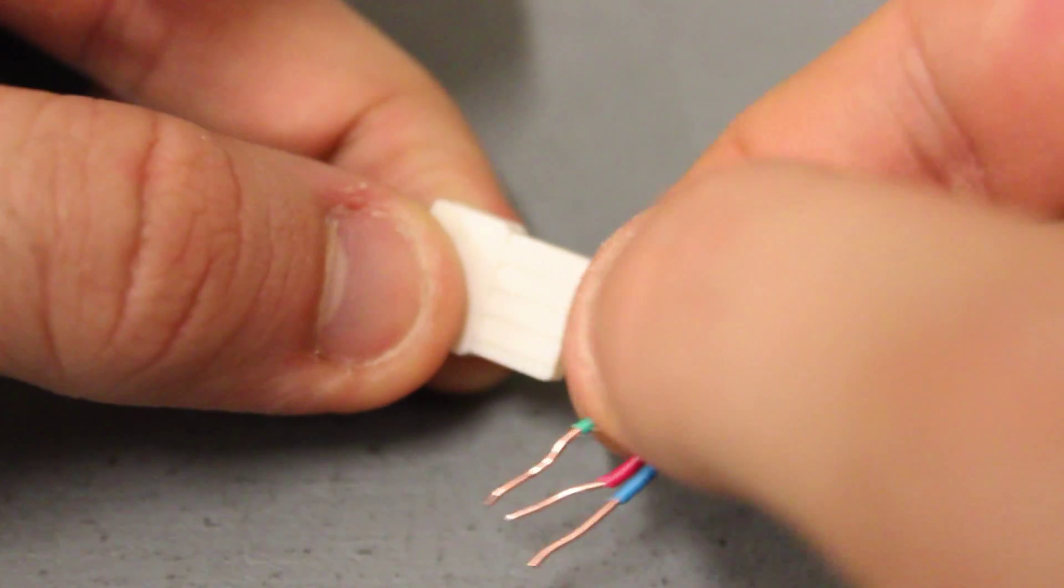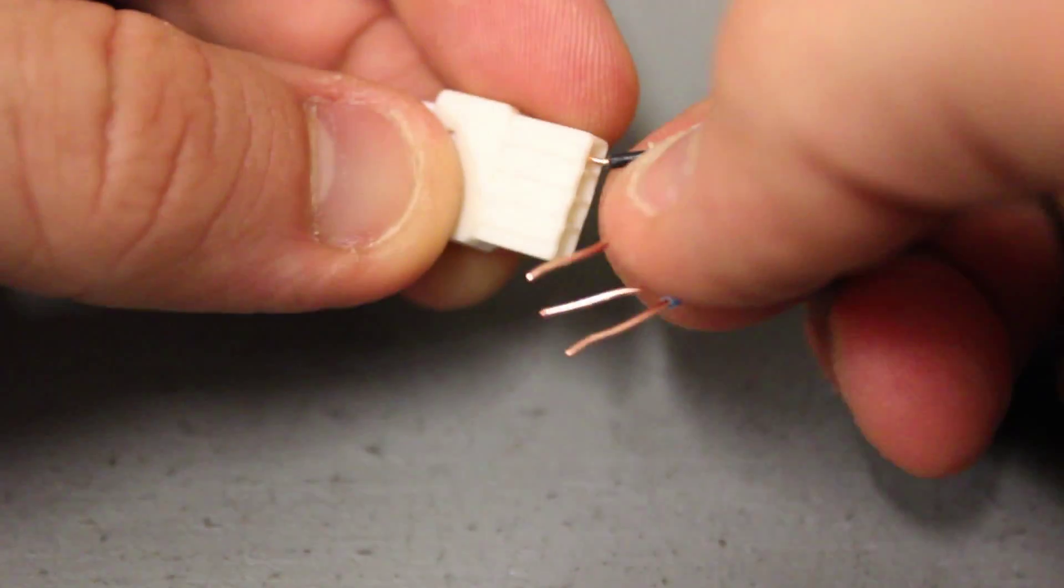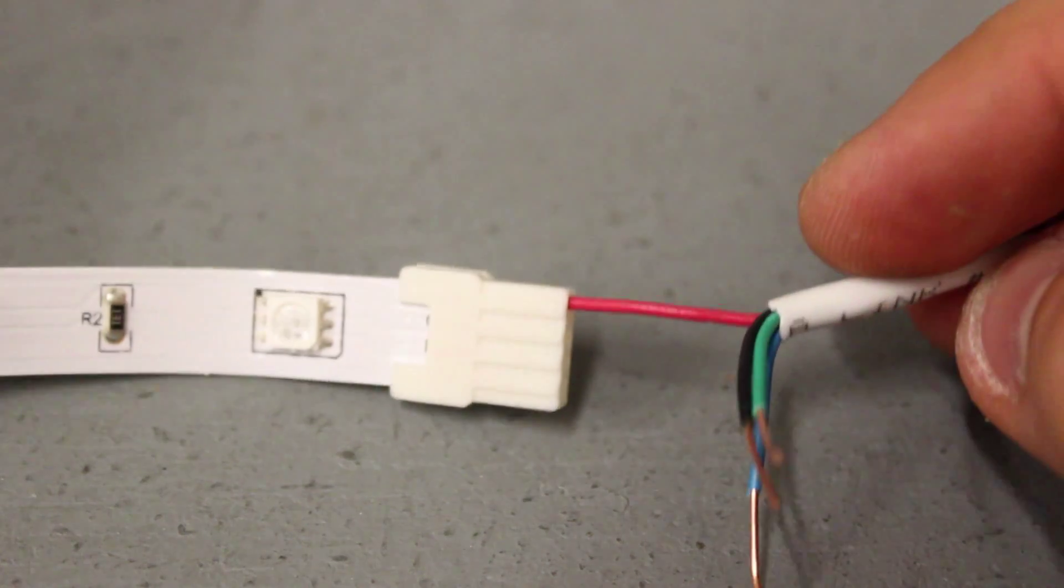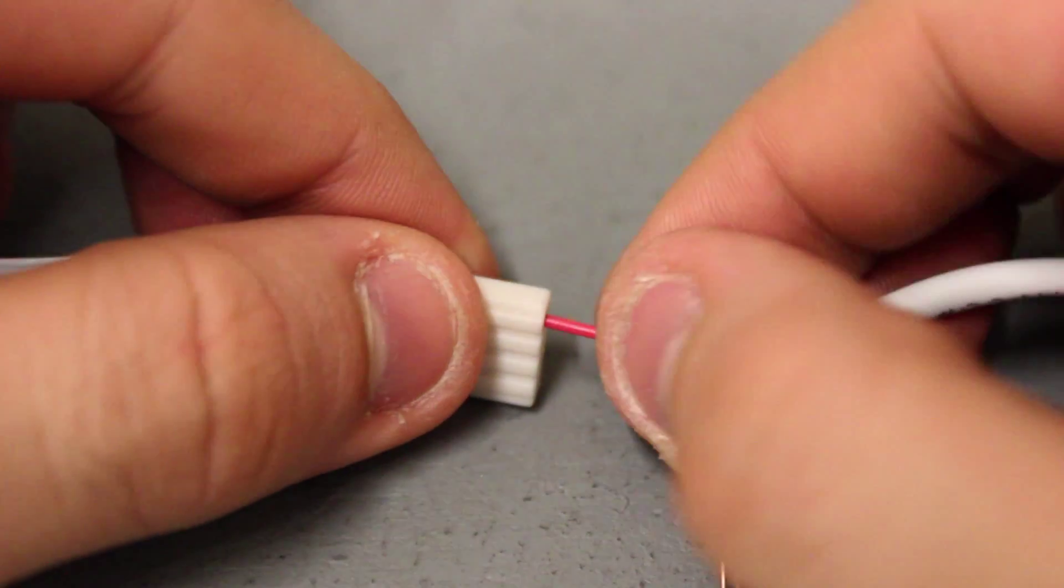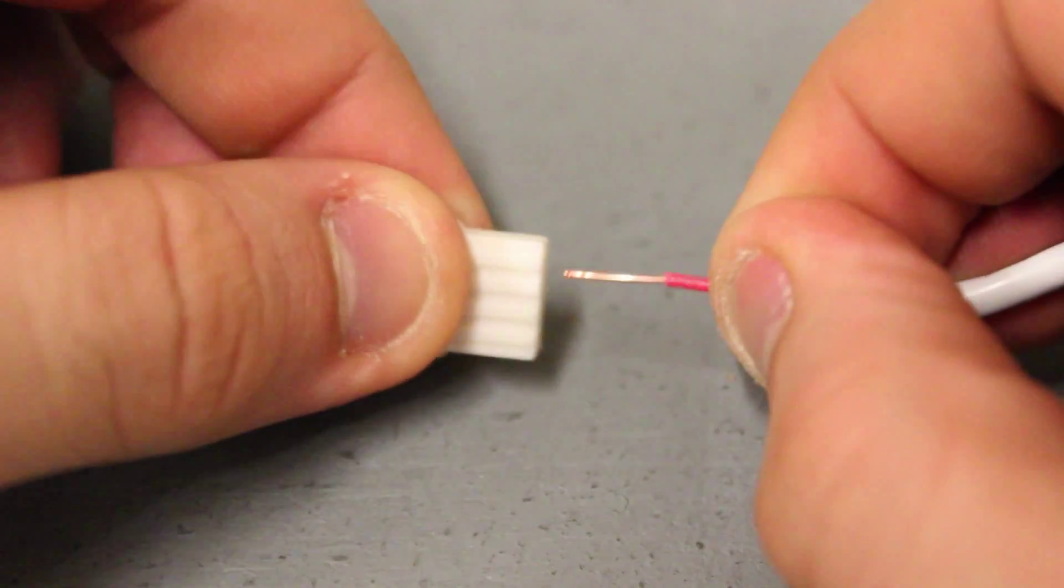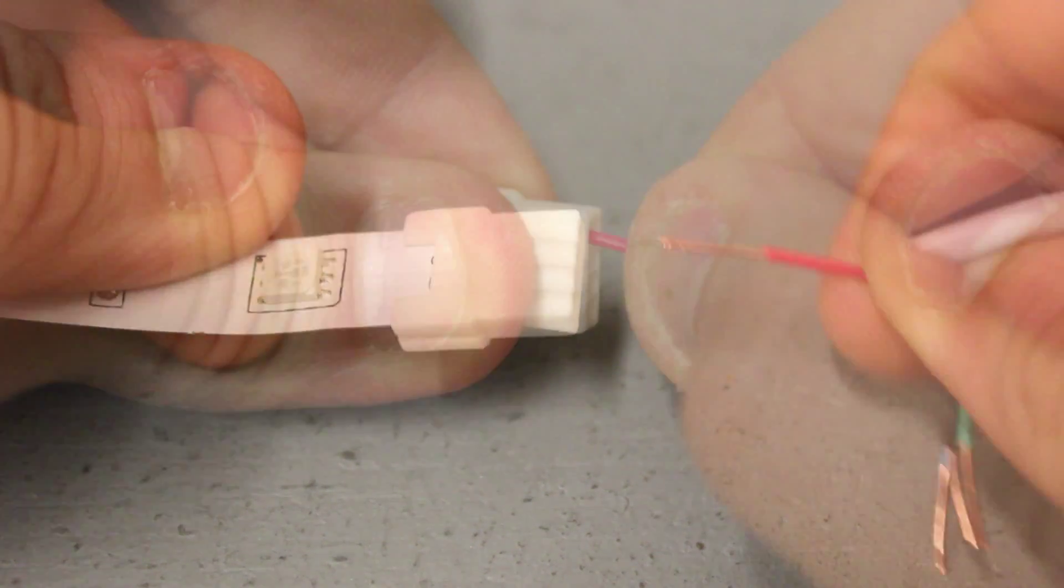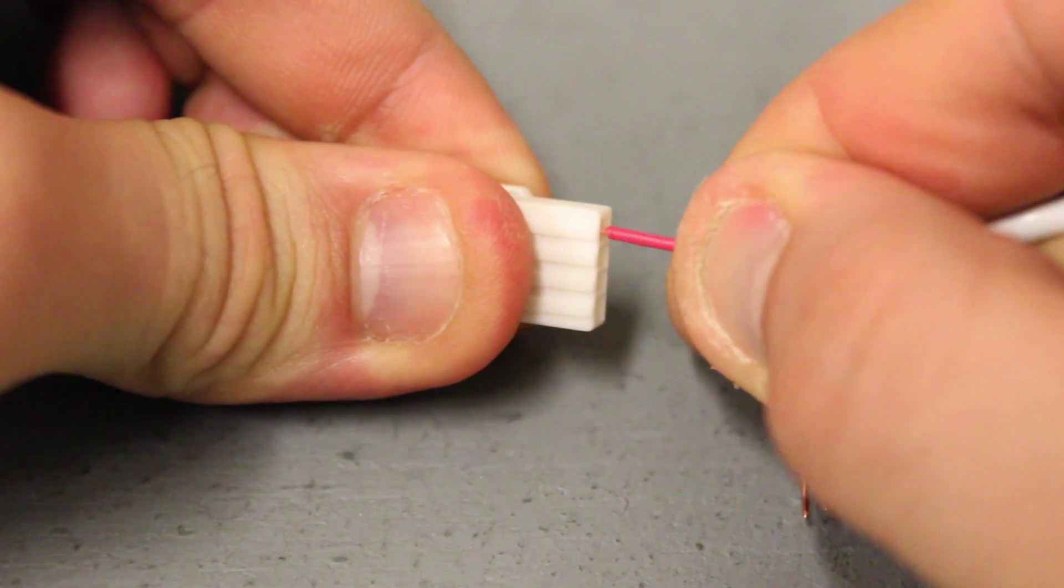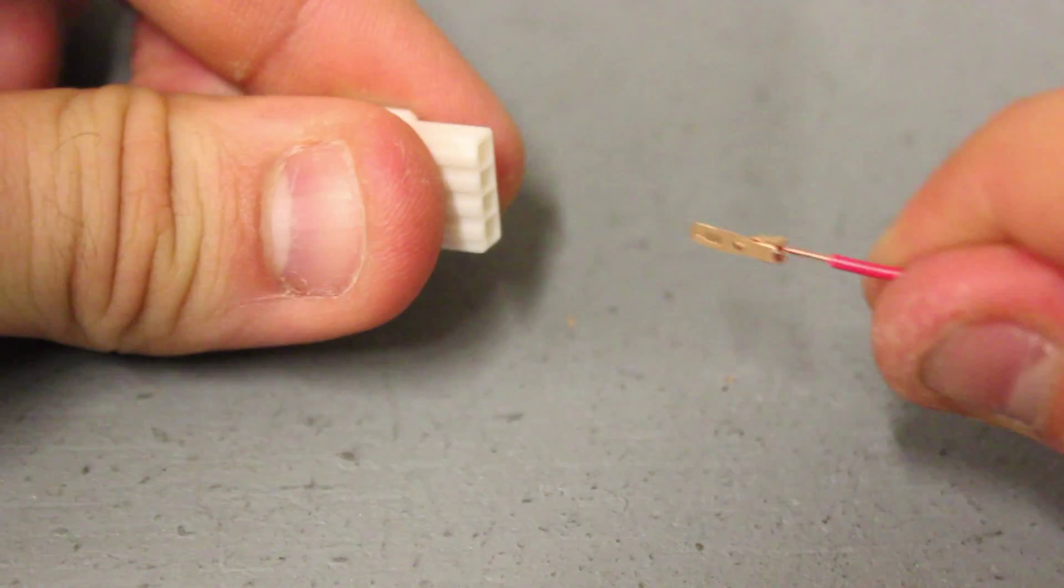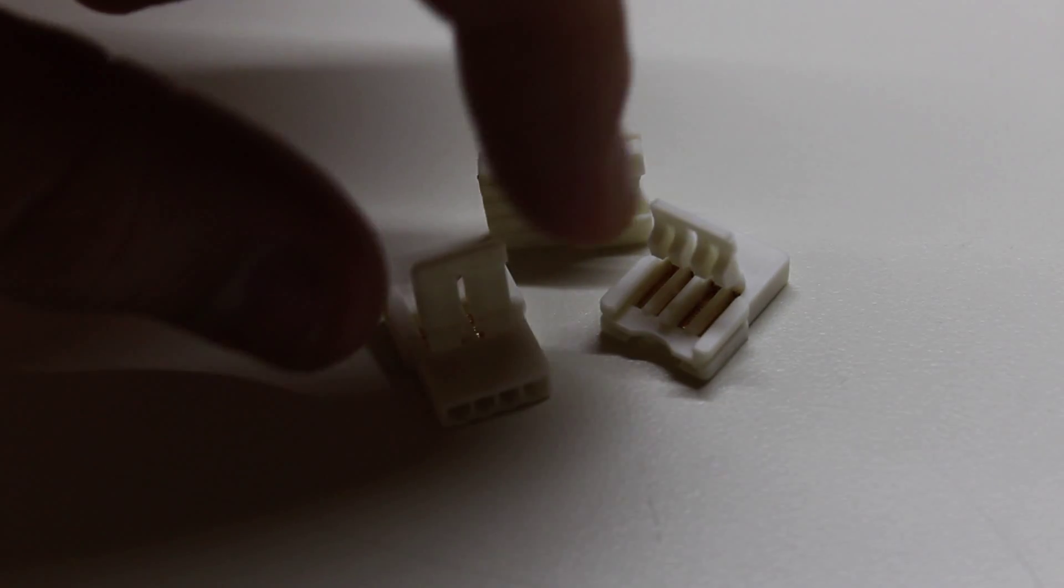When inserting the leads into the connector, you may have to wiggle them in there until you feel the connector bite the wire. In the event you insert the wrong lead into the wrong connector input, you can carefully remove the lead by wiggling the cable until you feel it unlock and remove the wire. Now you will not always be able to remove the cable easily. You may end up removing the copper contact point of the connector when trying to remove the wire. If this does happen, simply remove the entire connector and replace it.